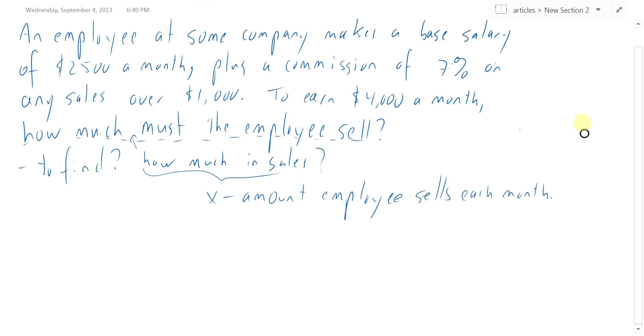So what is this employee's income each month? The income is $2,500, that's the base. And then a commission of 7% on any sales over $1,000.